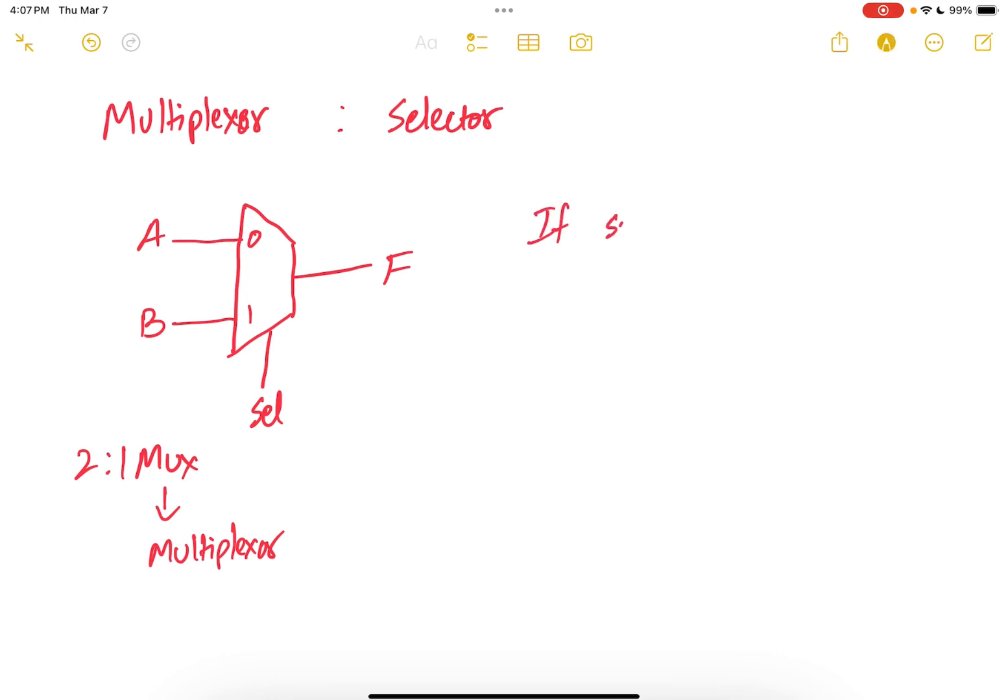So if SELECT equals 0, F is equals to A and if SELECT equals 1, F is equals to B. So if your SELECT equals 0, port 0 is selected and if your SELECT equals 1, port 1 is selected. When port 0 is selected, A goes to the output, so F is equals to A and when your SELECT is 1, B goes to the output, therefore F equals to B. That is how a multiplexer works.